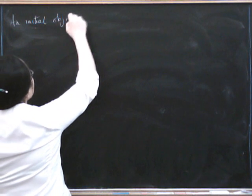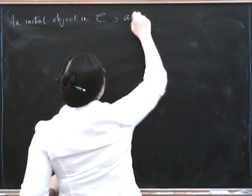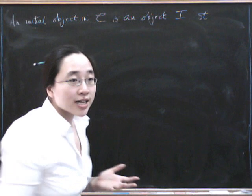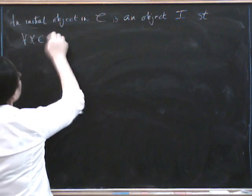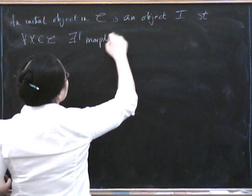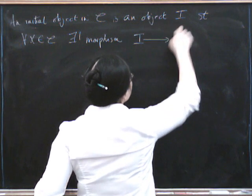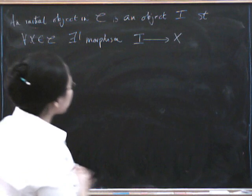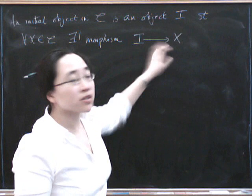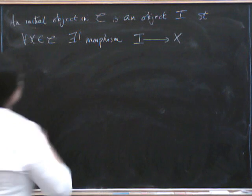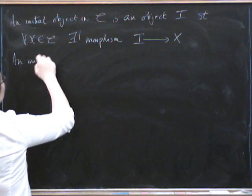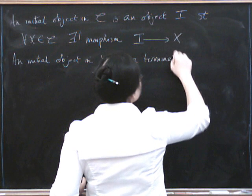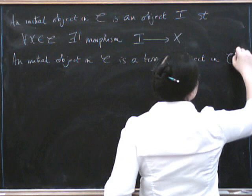So let's write down the definition. An initial object in the category C is an object I such that, well, what's the universal property? The bit that comes next is the universal property such that for all objects X in the category there exists a unique morphism from our initial one to our other one. So it's the kind of starting point because it's initial, right?